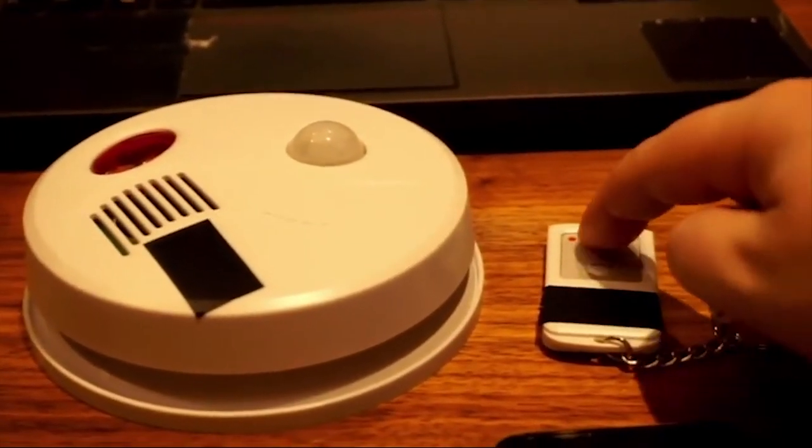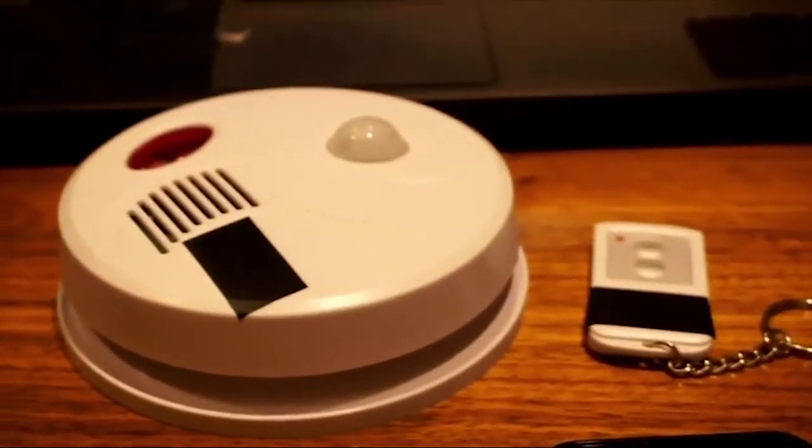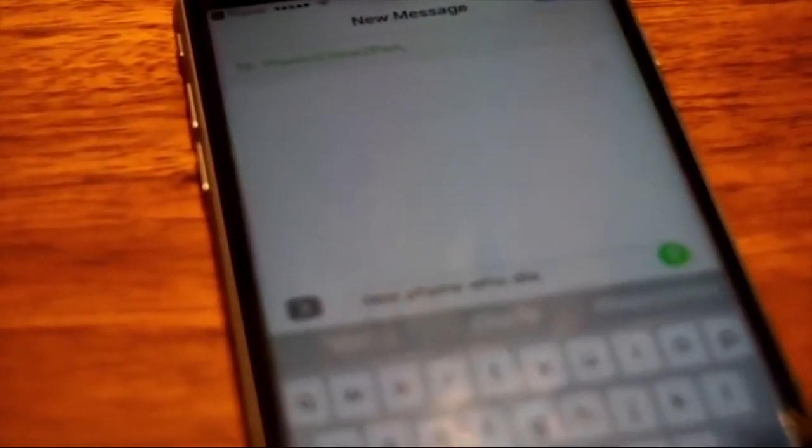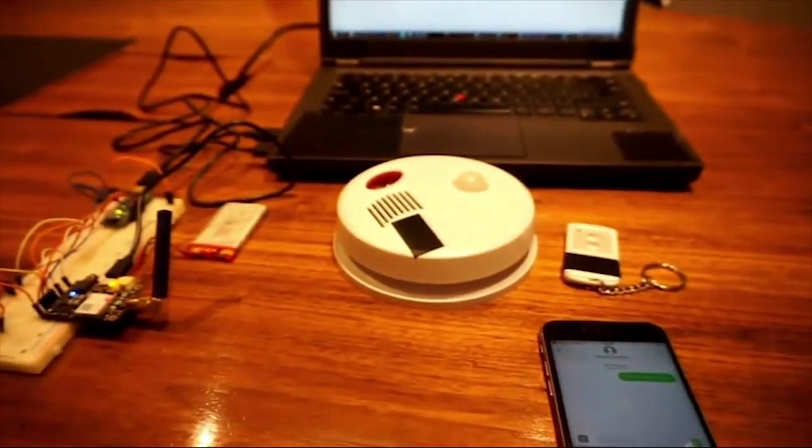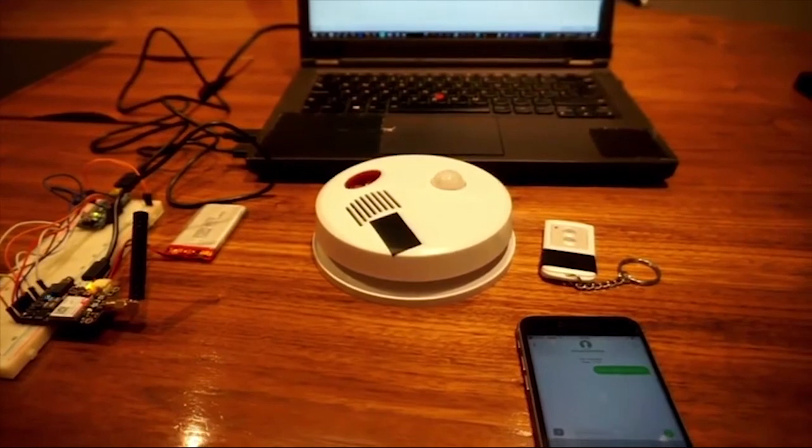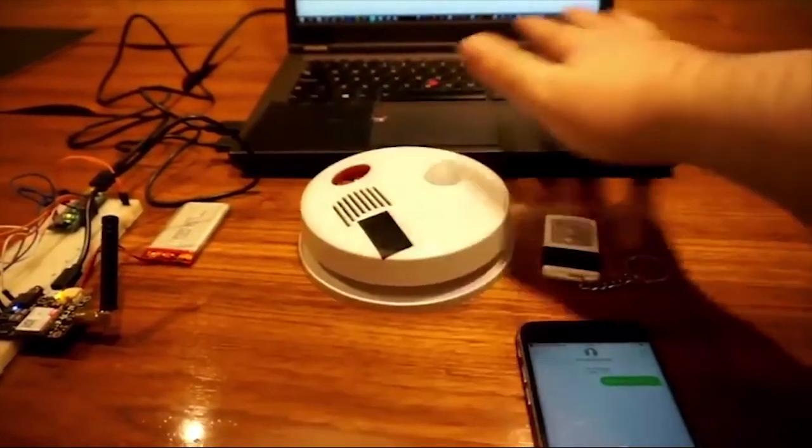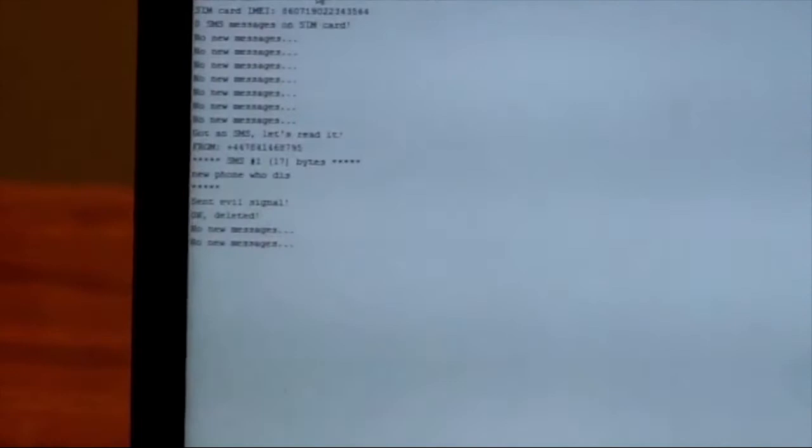So here's the alarm system as usual. What I'm going to do is arm it and just test it out to prove it's working. And then if we have a look at the sketch that's running on the Arduino, you can see it's checking for messages on that SIM card. Now in this case, the string that it's looking for on the SIM card is new phone who dis. And once that's sent that phone number, within five seconds, it will open that text message and disarm that system. And then if we just have another look back at the sketch, you'll be able to see that it has opened the text message, it's contained the string, so it sent the signal and it's deleted the text message from the SIM card as well.